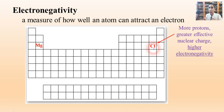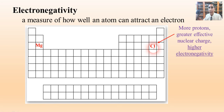That means those protons are pulling in the outermost energy levels very tightly, so chlorine is going to have a very high attraction. If there's an electron floating around nearby, it's going to be sucked in, and chlorine will attract that extra electron very easily.